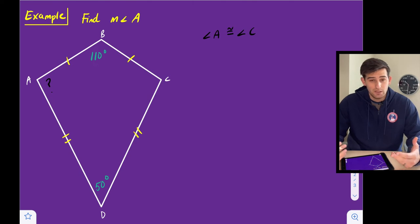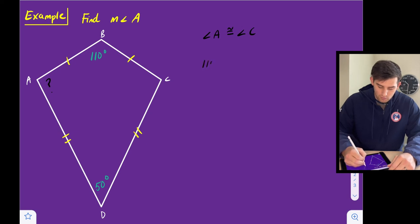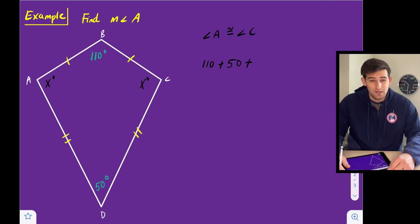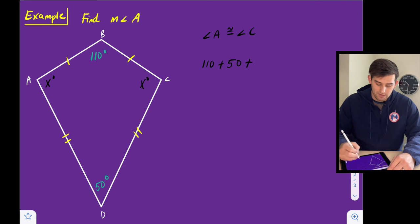So now we can use what we know about the angle addition for a quadrilateral. We have four sides, so the interior angles add up to 360 degrees. So I know I can have 110 degrees plus 50 degrees plus, and let's just call angle A and angle C X. They're X degrees. I'm using a variable X there. We don't know what the angle measure is, but we do know that those two angles are the same. So we could say plus X plus X equals 360 degrees.